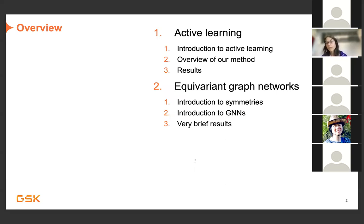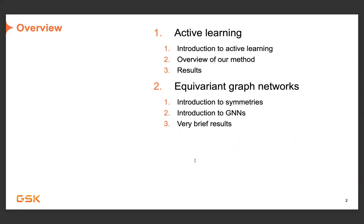I wanted to give an overview of two areas of machine learning research at GSK that I've worked on personally. Active learning is what I currently work on; equivariant graph networks is what I previously worked on as a postdoc at GSK. The talk is structured as two talks smashed together — I'll give a high-level overview of both sections, and then we can dive into specifics during questions.